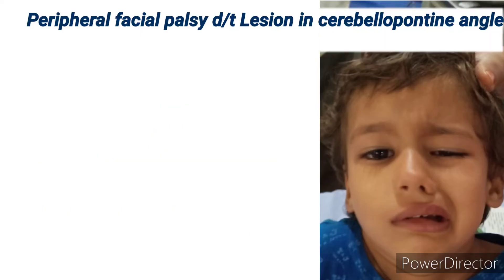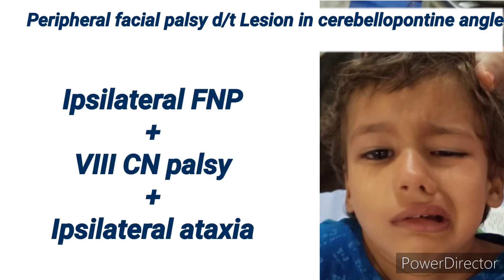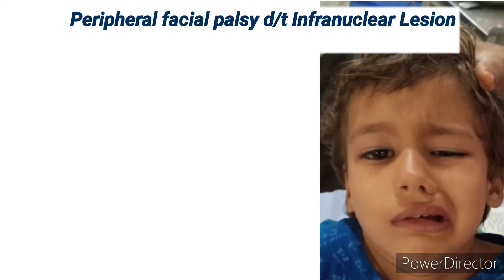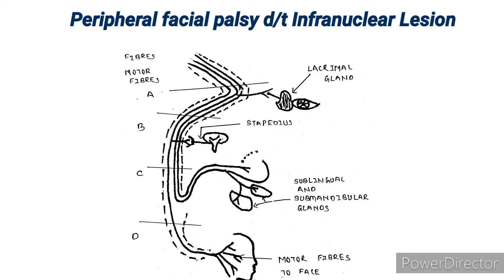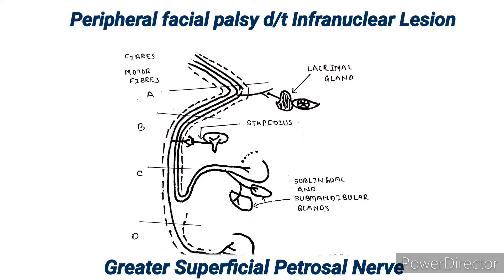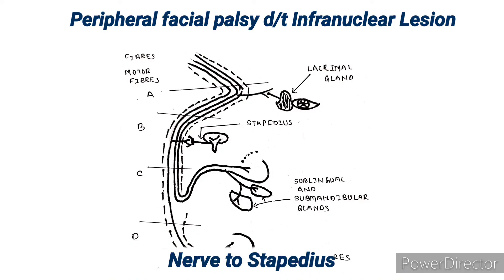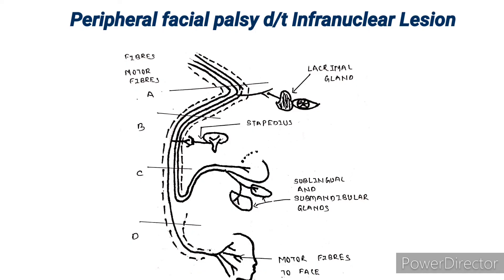Cranial nerve seven leaves the pons laterally and with cranial nerve eight crosses the cerebellopontine angle. A lesion at this level causes eighth cranial nerve palsy and cerebellar signs — ipsilateral ataxia will be present. After crossing the cerebellopontine angle, the seventh cranial nerve enters the internal acoustic meatus, travels to the geniculate ganglion where it turns posteriorly forming the first genu. From the first genu, the greater superficial petrosal nerve arises to supply the lacrimal gland.